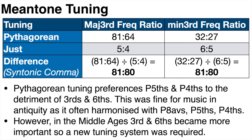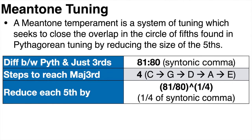Early in the history of music in antiquity, unisons, octaves, and perfect fifths were commonly used to harmonize melodies. But in the Middle Ages, as music developed and matured, thirds and sixths became more important as harmonizations. As we know today, thirds are the building blocks of chords, not fifths. So musicians needed a new tuning system which prioritized consonant-sounding thirds rather than fifths. And this is what meantone tuning does.